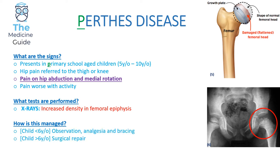The management of Perthes disease varies on the child's age. If the child is under the age of six, we offer analgesia, bracing, and we observe the child. If the child is above the age of six, we can offer surgical repair. To quickly summarise: Perthes disease affects primary school children, they have hip pain worse on hip abduction and medial rotation, X-rays are needed, and management varies upon the child's specific age.